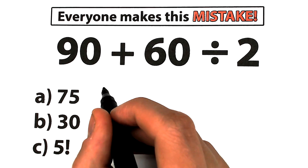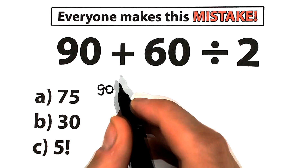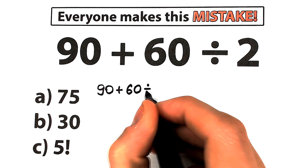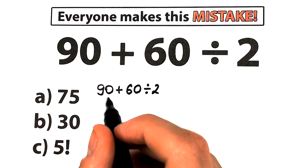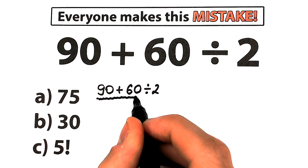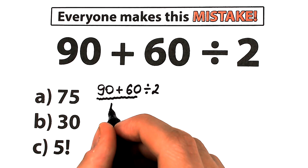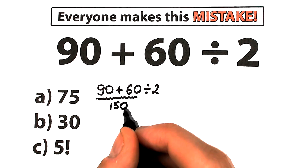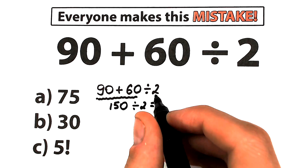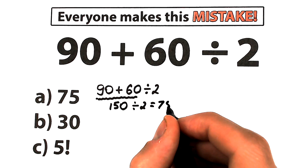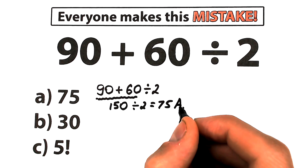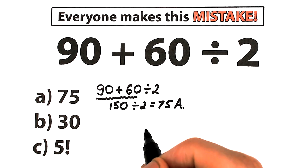One part of students solve this question like this: we have 90 plus 60 divided by 2, and they think we should start from the addition — so 90 plus 60 equals 150, then 150 divided by 2, and it looks like the correct answer is 75. So one part of students say the correct answer is 75, choose option A, and move on to the next question.